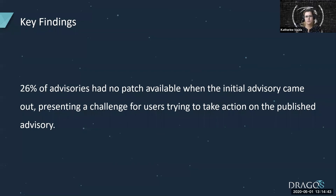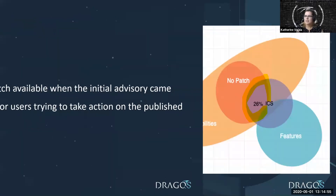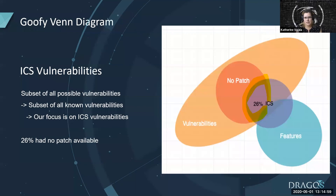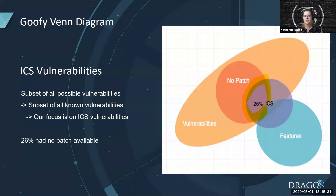26% of advisories in 2019 had no patch available when the initial advisory came out, presenting a risk or challenge for users trying to take action on the published advisory. This diagram shows the vulnerability landscape — we're only looking at ICS-related vulnerabilities, not all possible IT vulnerabilities like Windows or Cisco, unless specifically asked. The purple part is what we're looking at and reporting on. The 26% where no patch and the purple overlap represents the vulnerabilities we looked at that just had no patch from the time the advisory came out. This means users and administrators had to figure out some other mitigation besides a patch to reduce these risks.